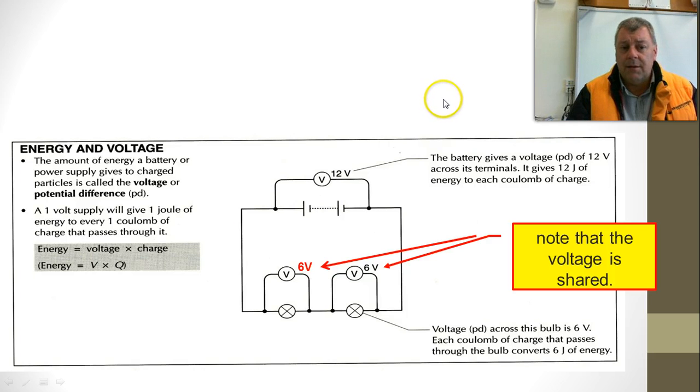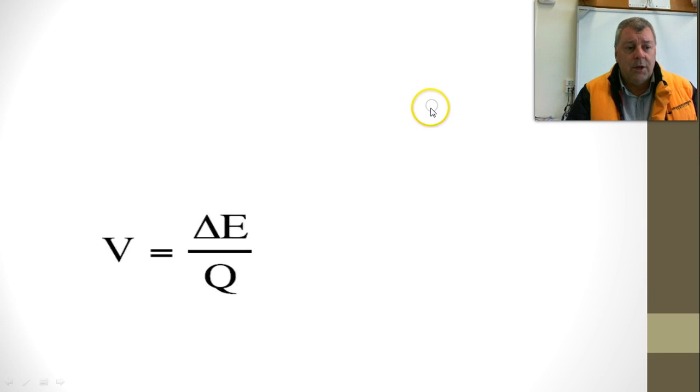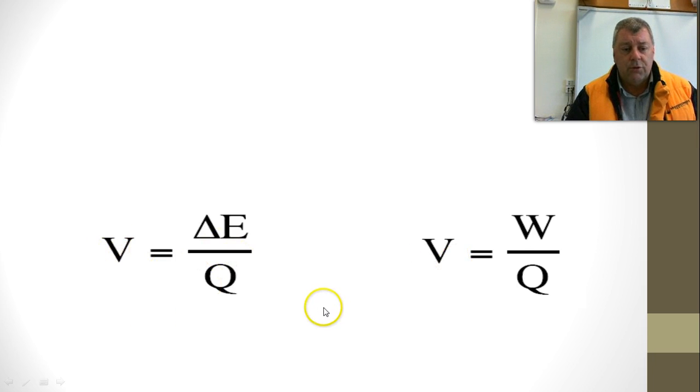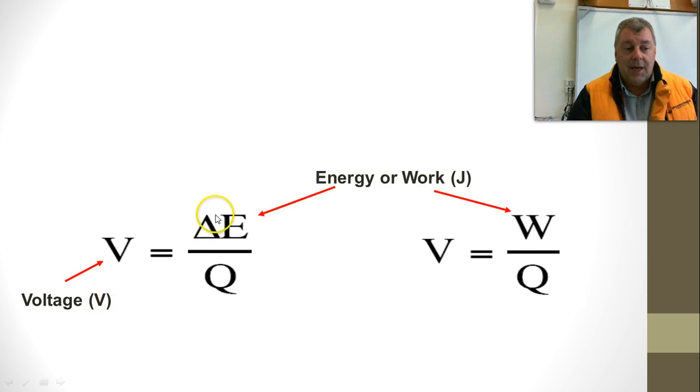That's a bit complicated. Let's simplify it by using some equations. Here we have V. These two equations look very similar, and they're on your information sheet. V is the symbol for voltage in volts. Delta E means change in energy, which is the same as W, which is work.